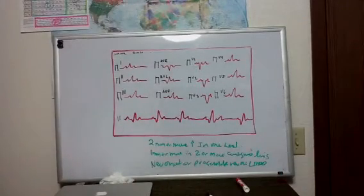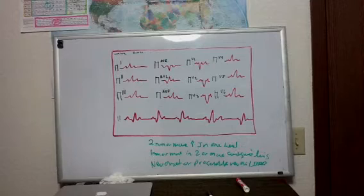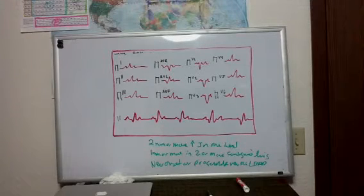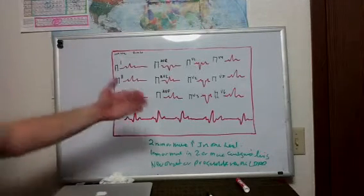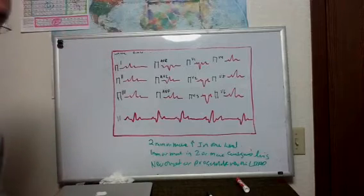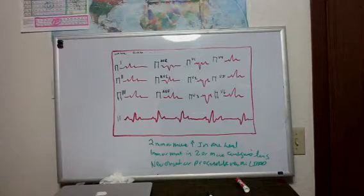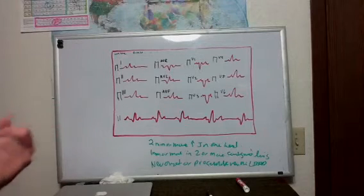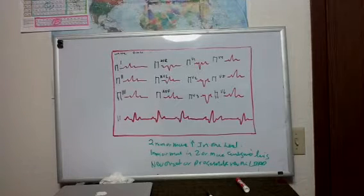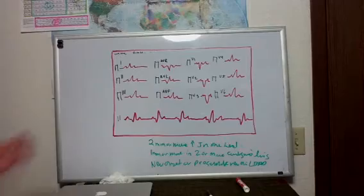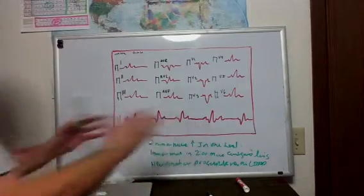A bundle branch block can masquerade as ST elevation, and that can really complicate the picture. So if I have a patient that has signs and symptoms that are consistent with an acute coronary syndrome, and I look on their ECG and they have a left bundle branch block, and we think it's new, or maybe we look at an old ECG and they didn't have it and now they do, it's presumably new, we have to assume that they're having an acute coronary syndrome.